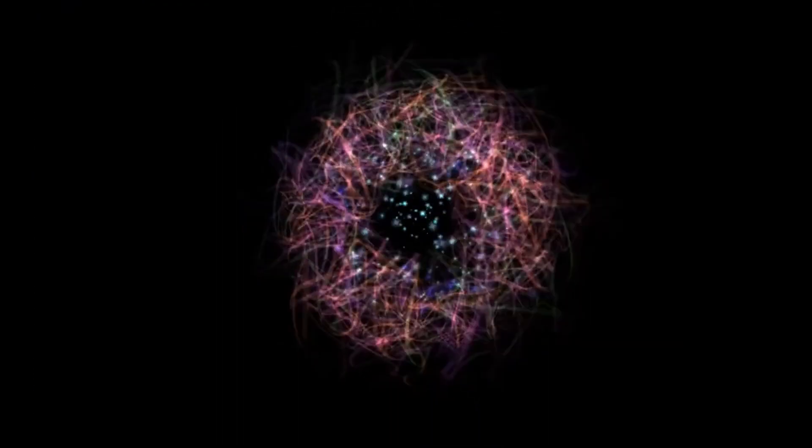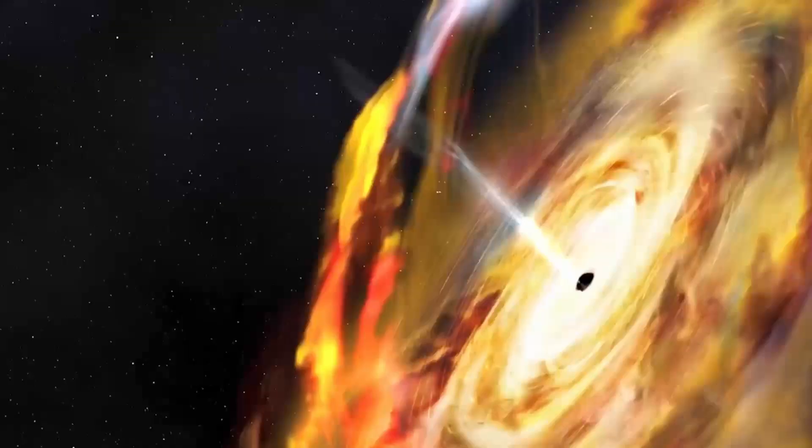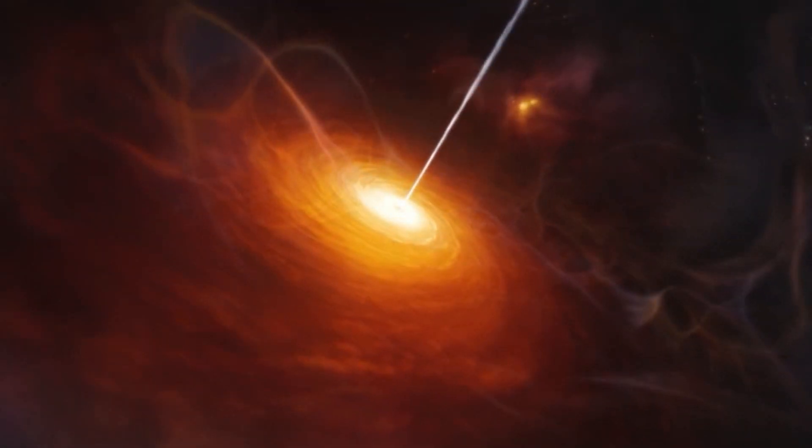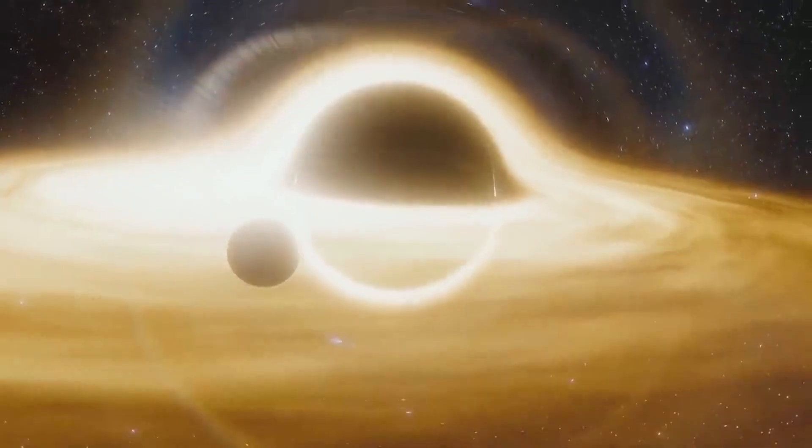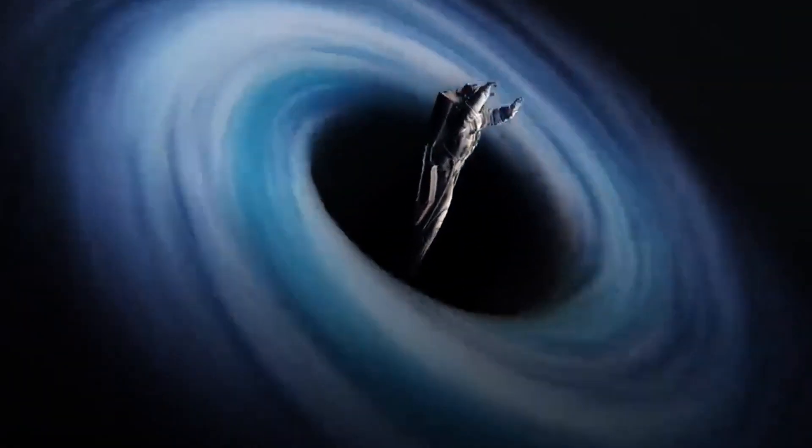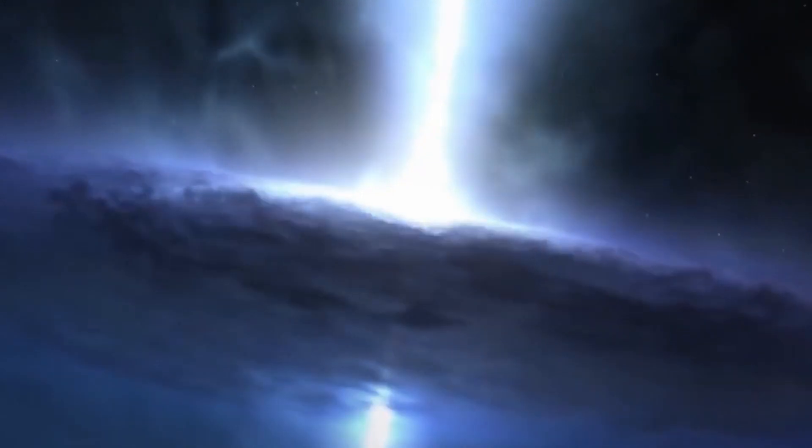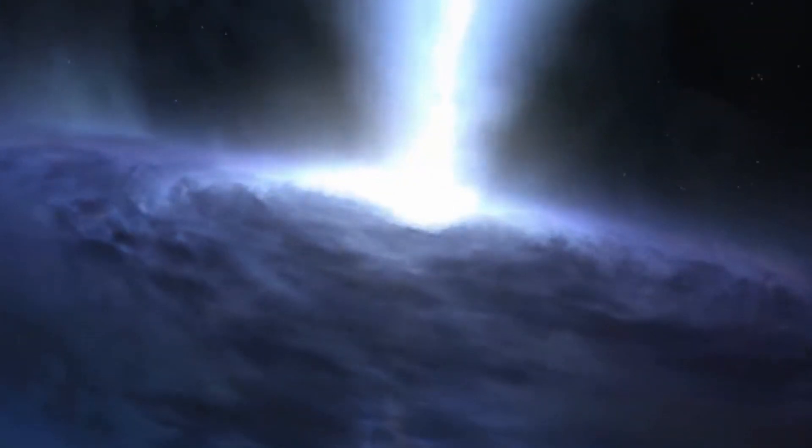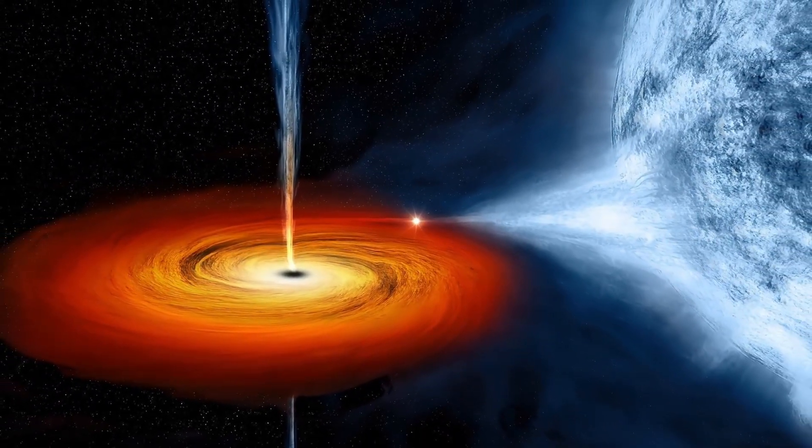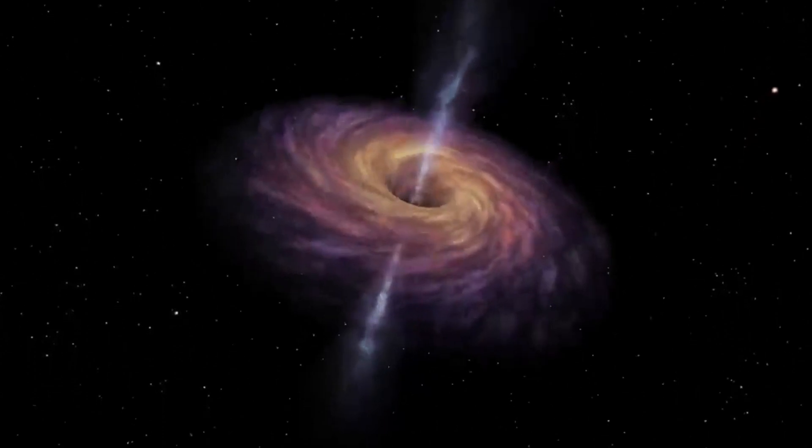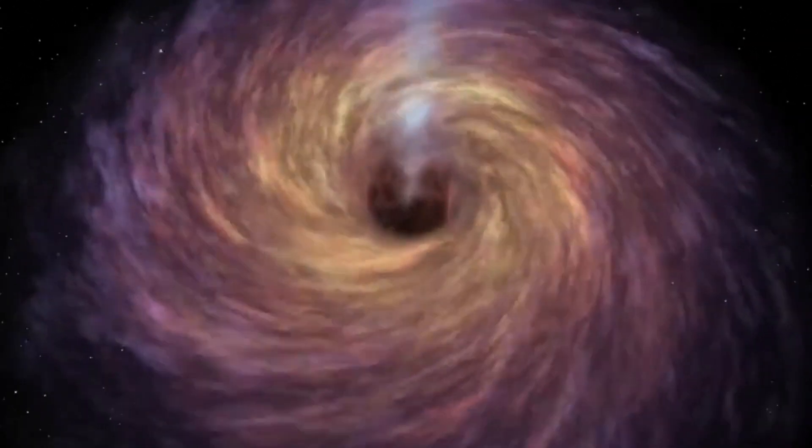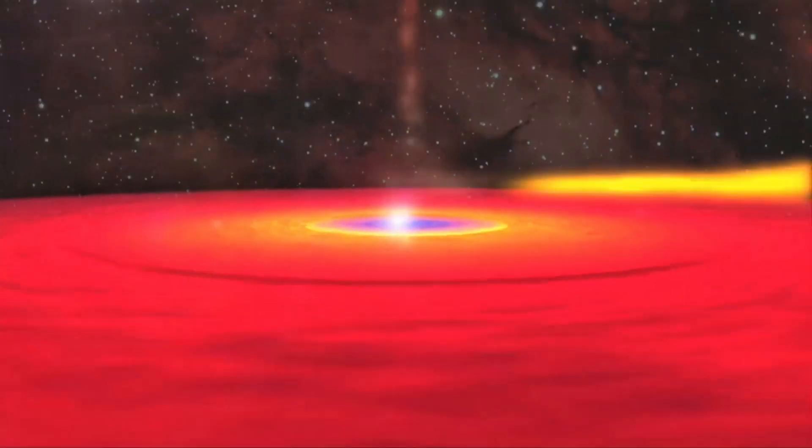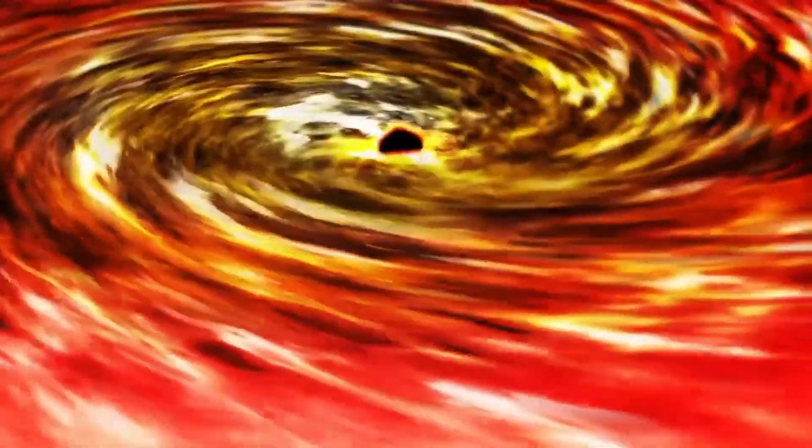The event horizon is a unique feature of black holes that sets them apart from all other objects in the universe. It is the point beyond which nothing can escape the gravitational pull. This means that once an object crosses the event horizon, it is lost forever. It's impossible for anything, including light, to escape the black hole's gravitational pull. Another special feature of the event horizon is that it is a one-way membrane. Anything that falls into a black hole is lost forever, and no information about it can be retrieved.